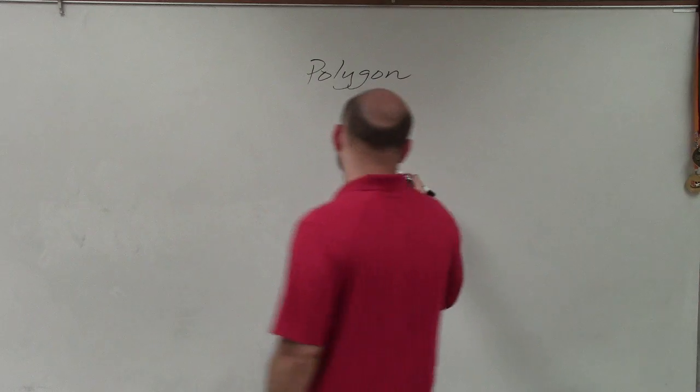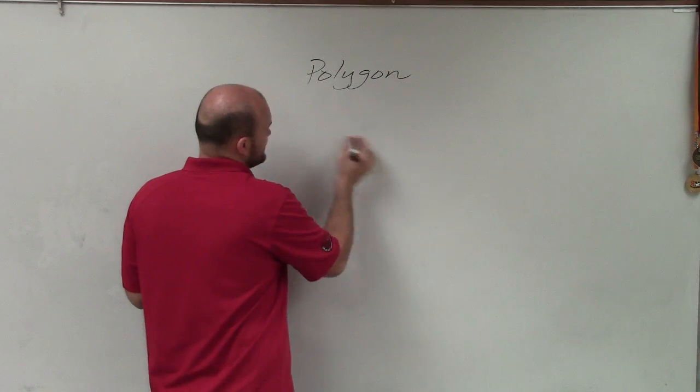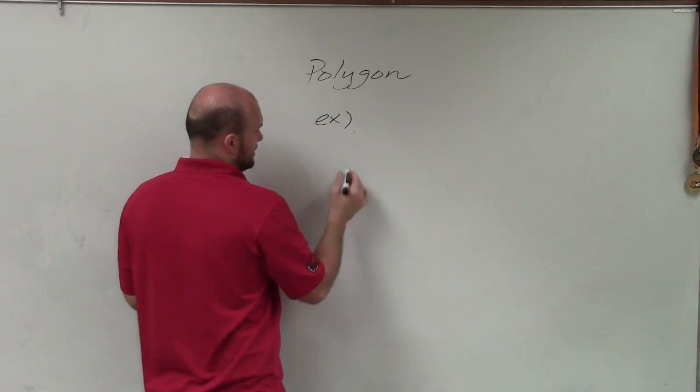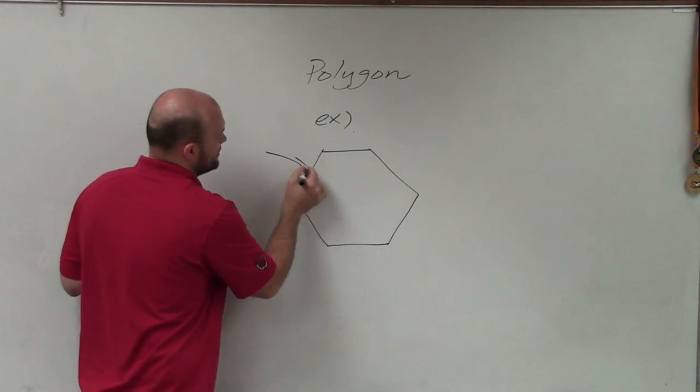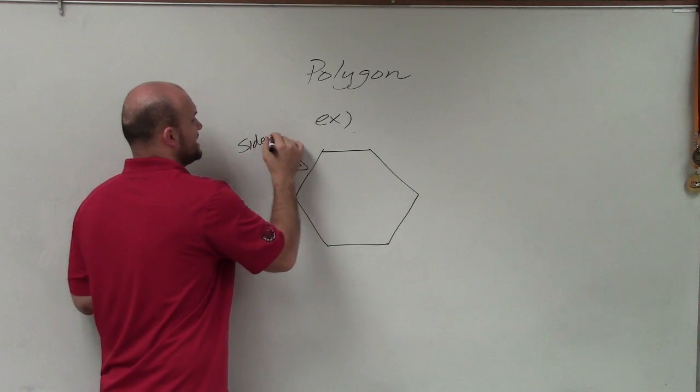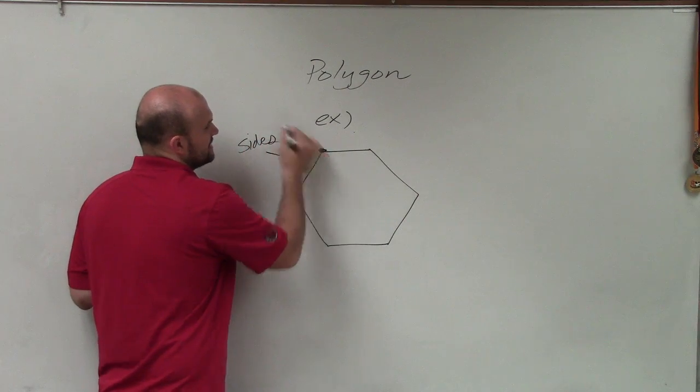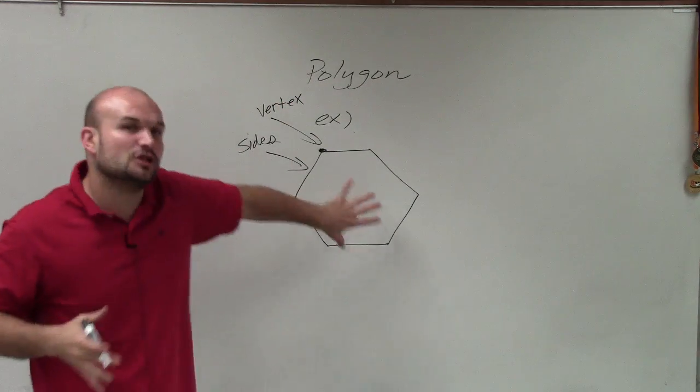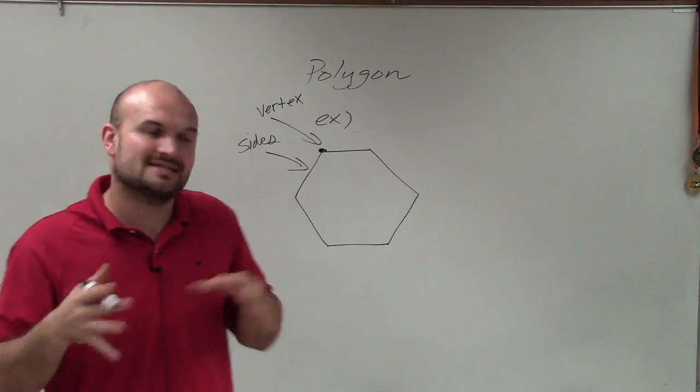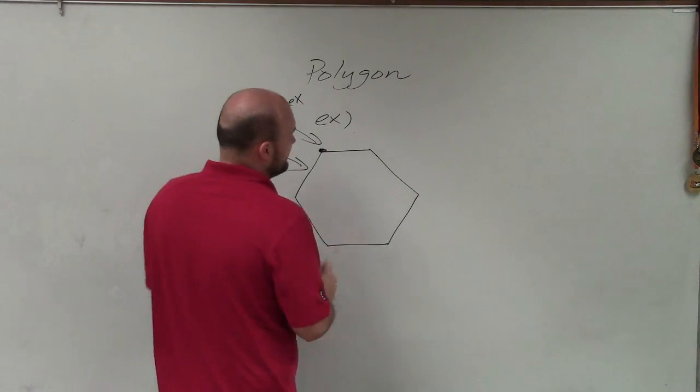So, for instance, an example of a polygon would be this hexagon, where you can see here's what we call our sides. And where two sides come together, we call that a vertex. You can see this is closed. There's no opening center and there's no extra figure.